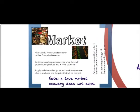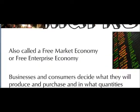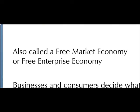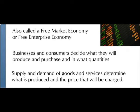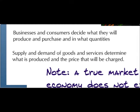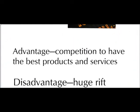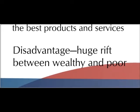The second kind of economic system is a market system, also called a free market economy or free enterprise economy. In this kind of economy, it's businesses and consumers who decide what they will produce and purchase and in what quantities. This all comes from supply and demand — the supply and demand of goods and services decides what's produced and the price that will be charged. If people want it, they'll demand it, and therefore it will be supplied. The advantage is competition to have the best products and services, but the disadvantage is there can be a huge rift between wealthy and poor because there's nothing built in to ensure equality between the two.